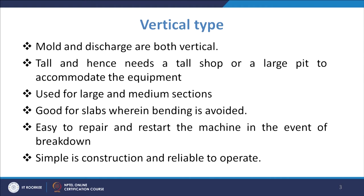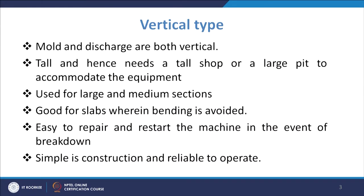The vertical type is used for large and medium sections and also for slabs where bending is avoided. In other caster designs there is bending involved, and wherever bending is to be avoided the vertical type is preferred, because here the product comes vertically down. It is suitable for large and medium sections because bending is very difficult for heavy or large sections, so in those cases the vertical type of equipment is preferred.